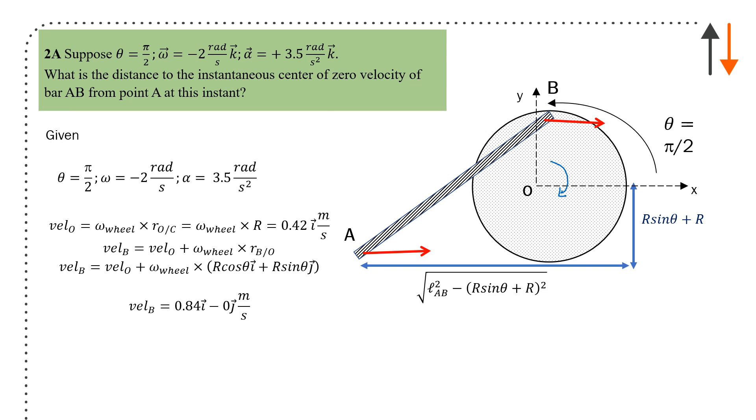Here are all the calculations in vector form. Velocity at point O is omega of the wheel cross with r_O with respect to C—C is down here at the very bottom. You get 0.42 meters per second. Velocity of B is velocity of the wheel at O plus omega wheel cross with r_B with respect to O. Omega of the wheel is minus 2 rads per second k, and the distance is r cos theta, r sin theta. Clearly it's all going to be r in the j direction.